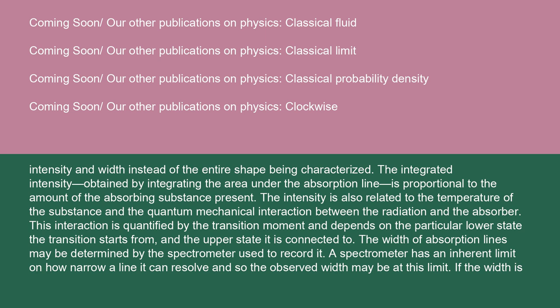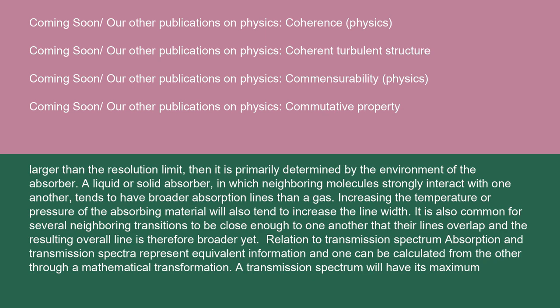The width of absorption lines may be determined by the spectrometer used to record it. A spectrometer has an inherent limit on how narrow a line it can resolve, so the observed width may be at this limit. If the width is larger than the resolution limit, then it is primarily determined by the environment of the absorber. A liquid or solid absorber, in which neighboring molecules strongly interact with one another, tends to have broader absorption lines than a gas. Increasing the temperature or pressure of the absorbing material will also tend to increase the line width. It is also common for several neighboring transitions to be close enough that their lines overlap, and the resulting overall line is therefore broader yet.